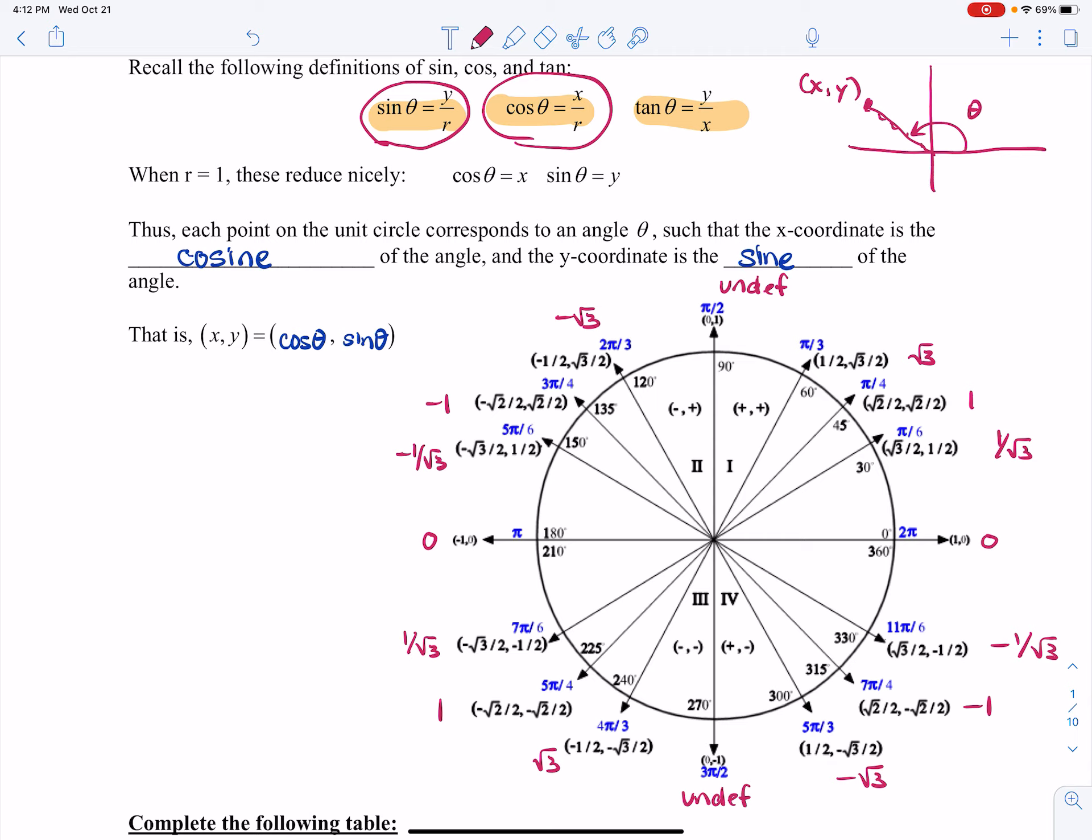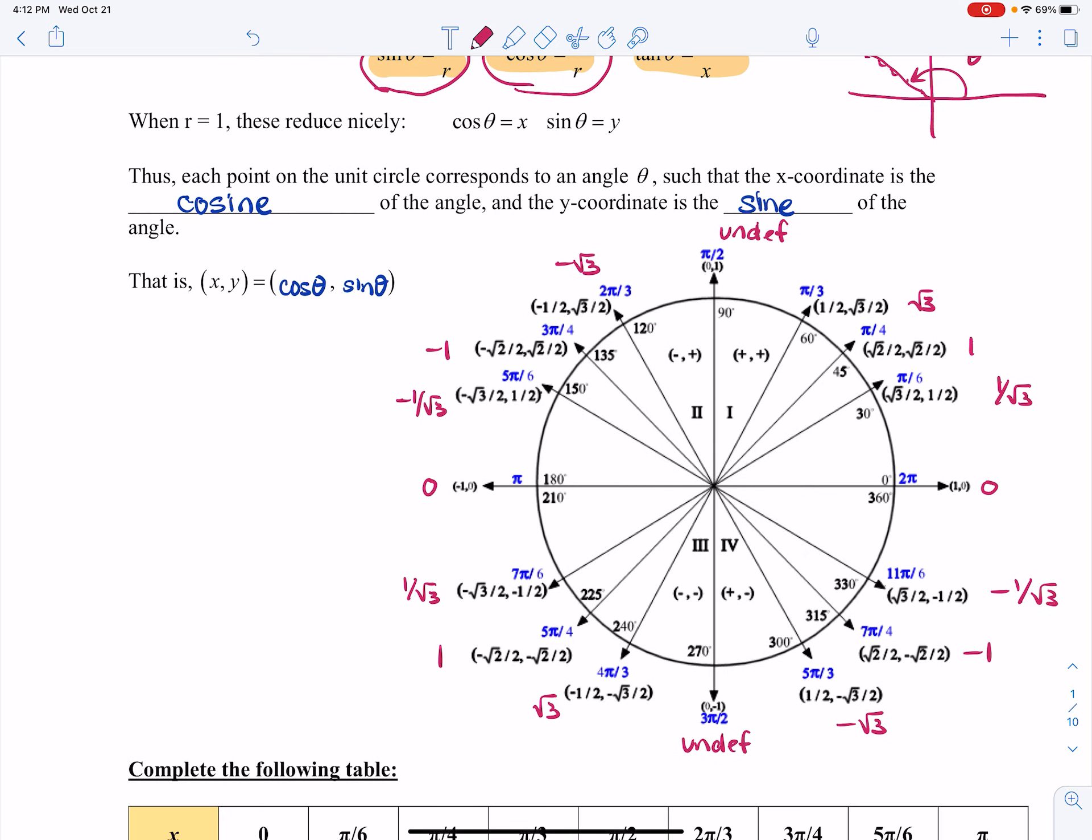So that means any point on the unit circle is basically the cosine of an angle for the x-coordinate and the sine of the angle for the y-coordinate. So I have a lot of things labeled here on this unit circle.